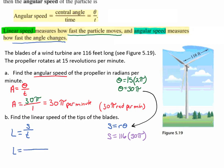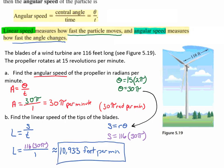When we multiply those together, we can put those on the top: 116 times 30 pi over 1, because time is 1 minute. When we plug that into the calculator, that gives us approximately 10,933 feet per minute. It's moving 10,933 feet per minute. That's how fast that particle is moving. That's how you would find angular speed and linear speed.